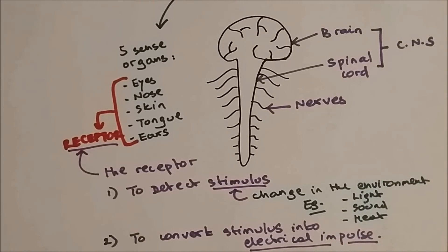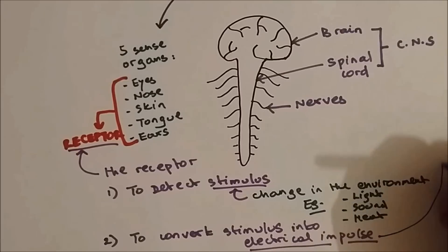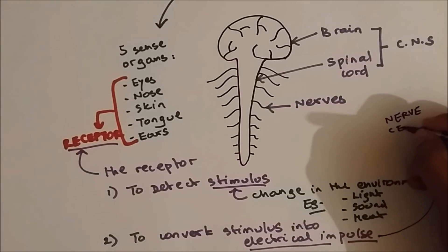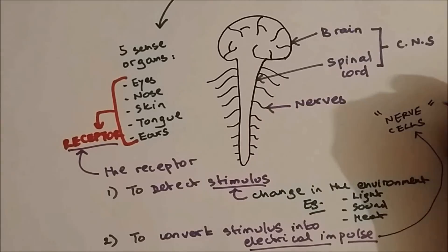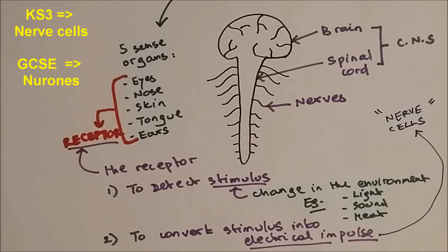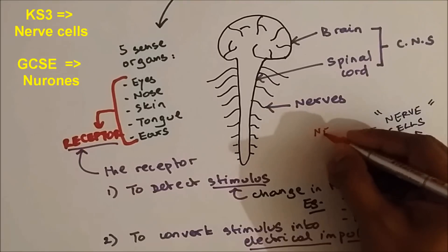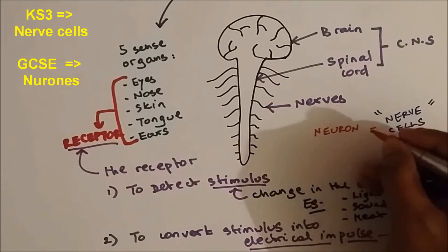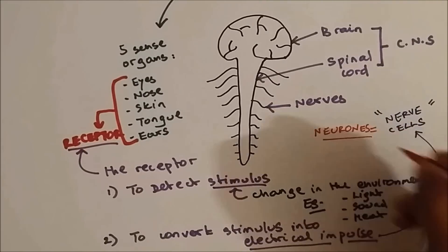Why electrical impulse? Because once they are changed into an electrical impulse, they can be carried by the nerve cells. When you are in stage 3 it's alright to call them nerve cells, but since you are in GCSE now, it's better to call them by their actual name, which is neurons.